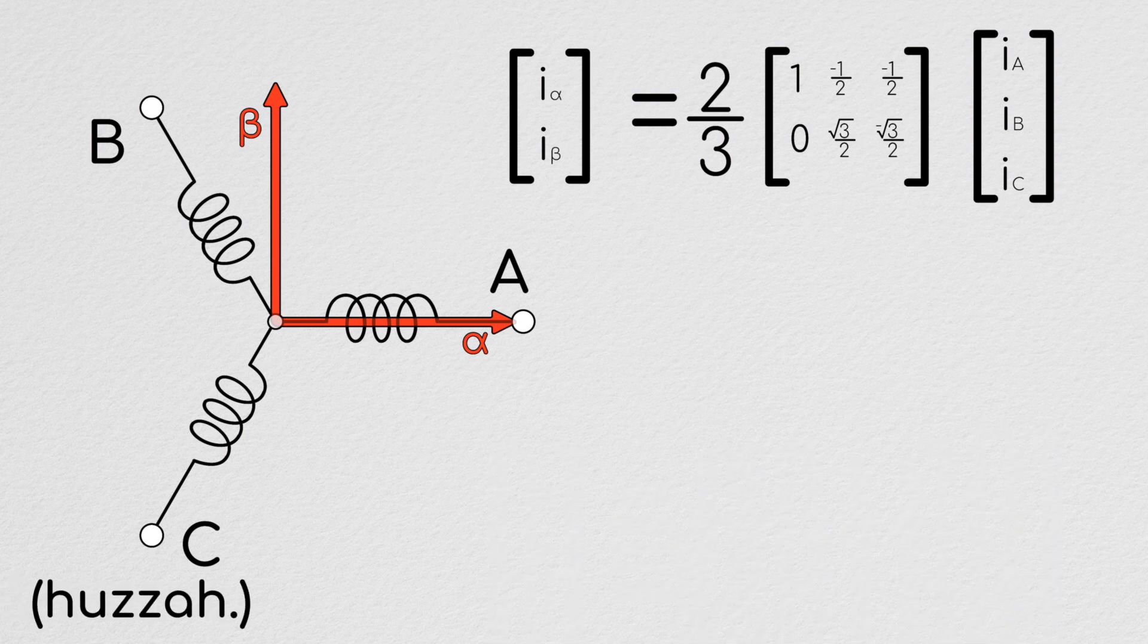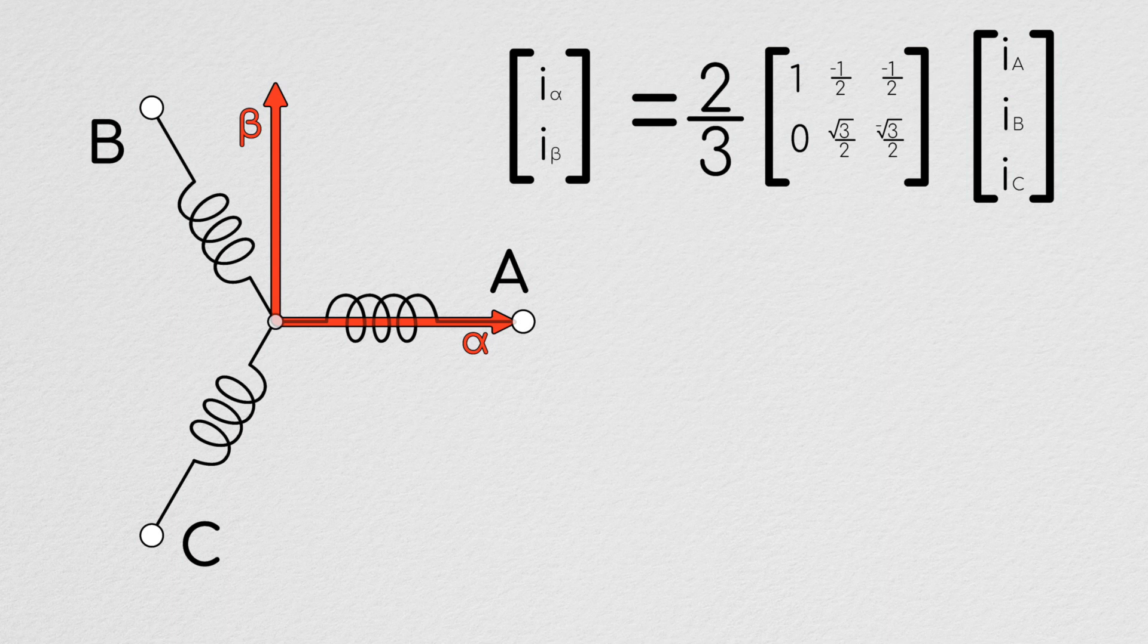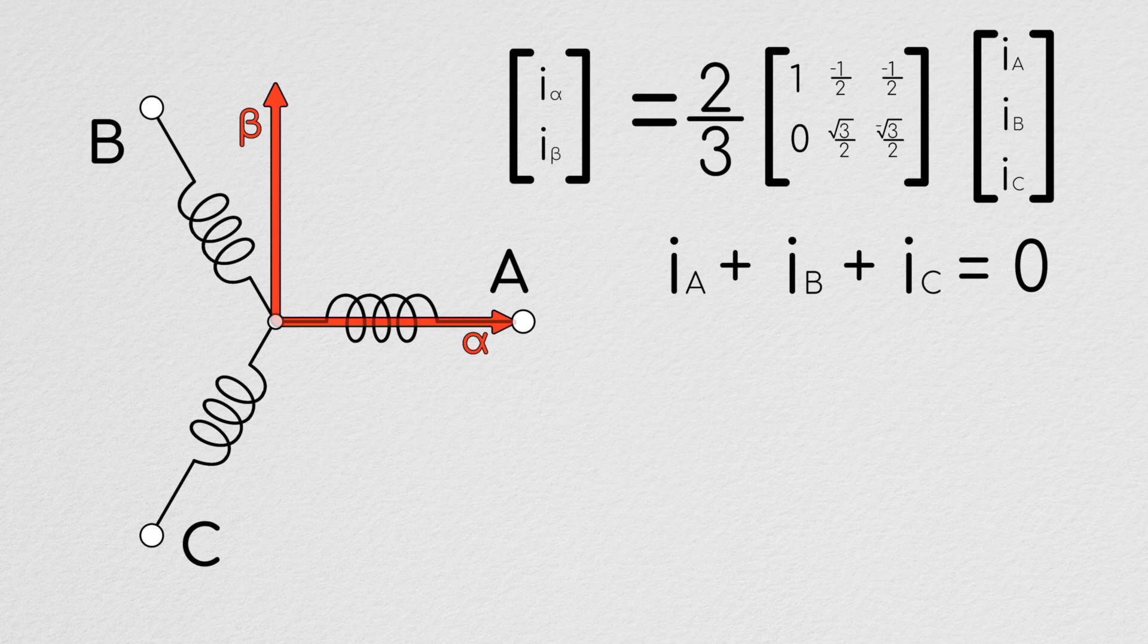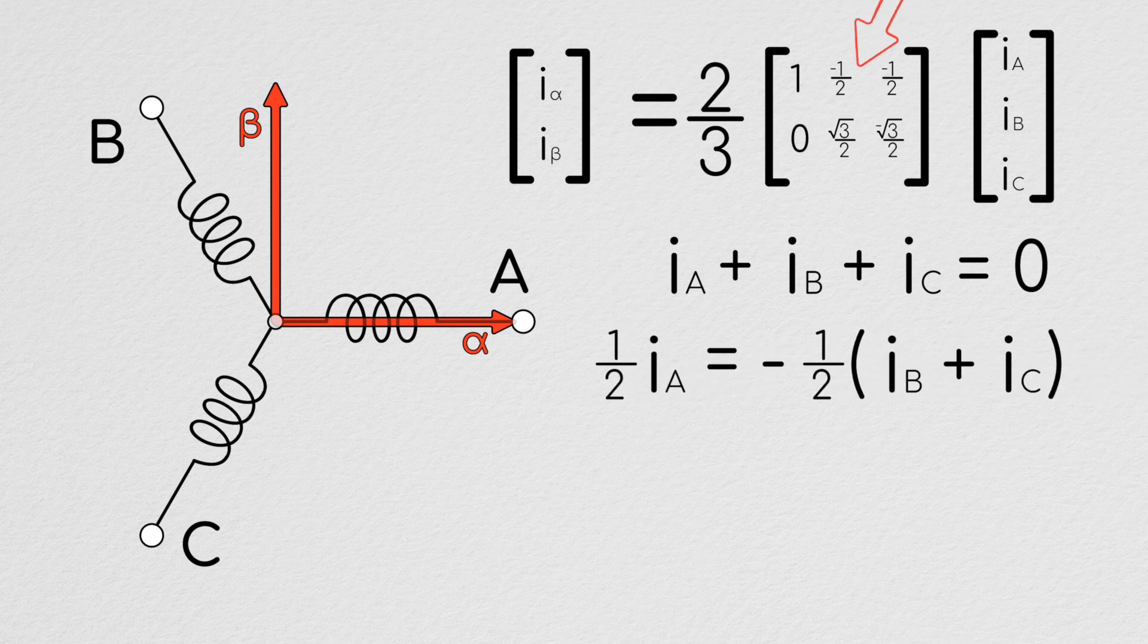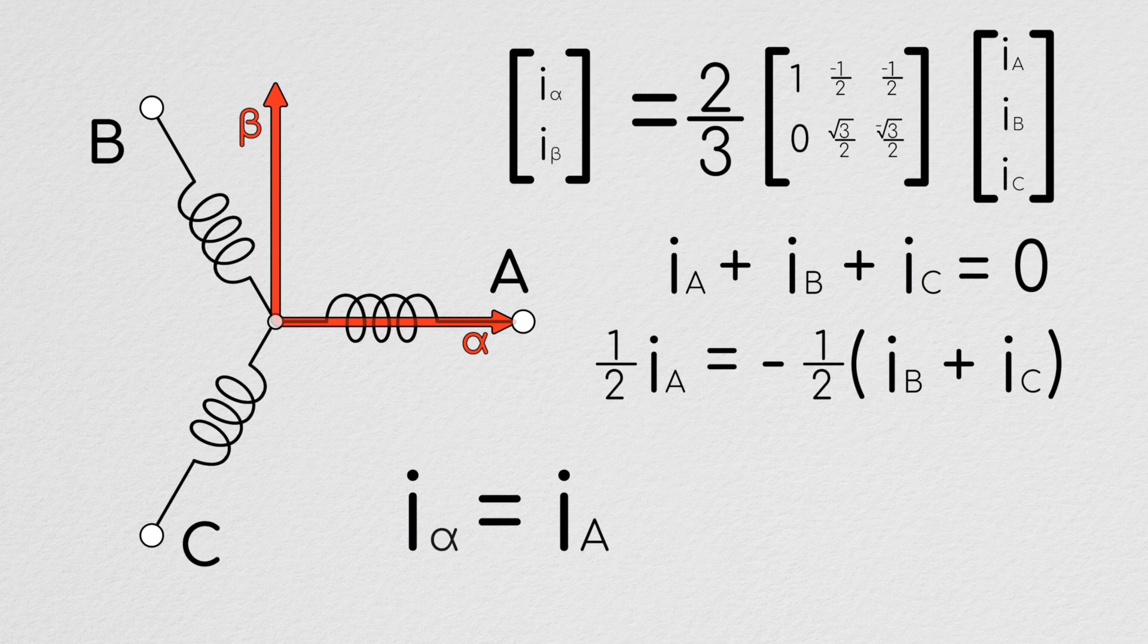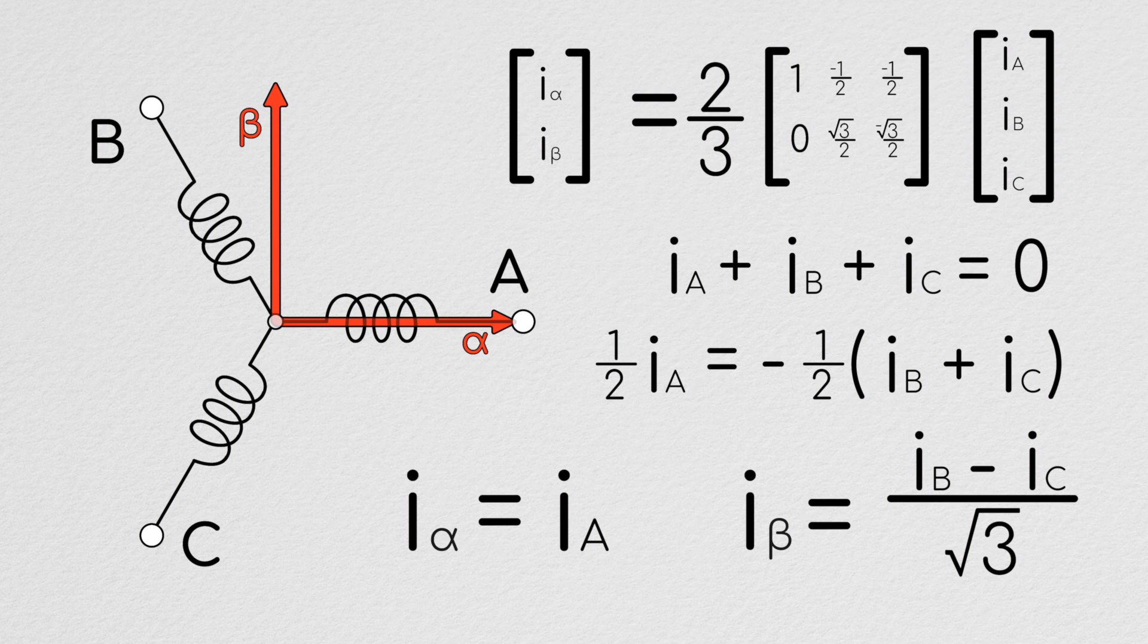So, now we get what the Clark transformation says, but it can actually be further simplified, because once again, the three-phase system we're talking about is assumed to be balanced, and thus it follows Kirchhoff's current law, meaning the current in phase A plus that in B plus that in C must equal zero. By moving some variables around and doing some substitution, we can then see that the current in alpha is equal to the current in A, whereas the current in beta is the current in B minus the current in C divided by the square root of three.